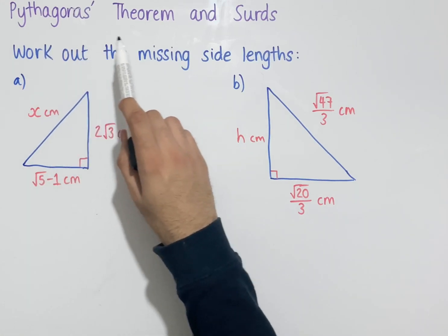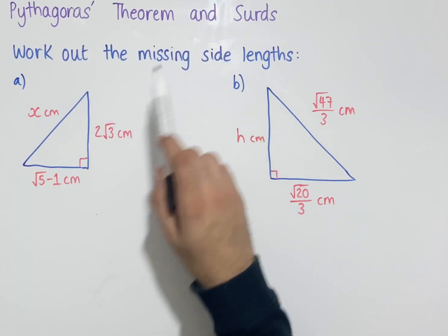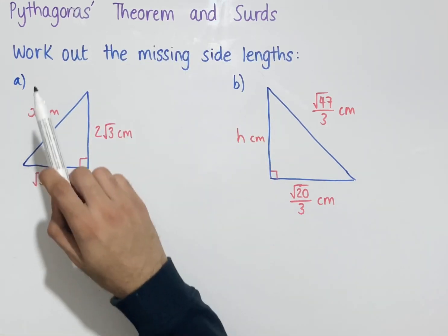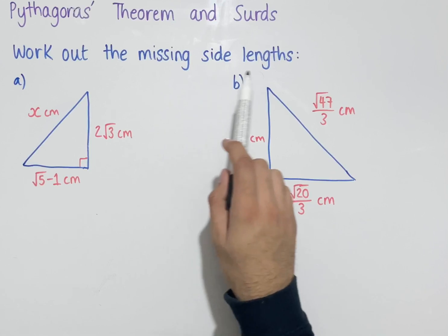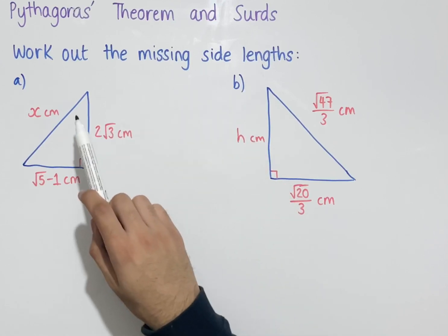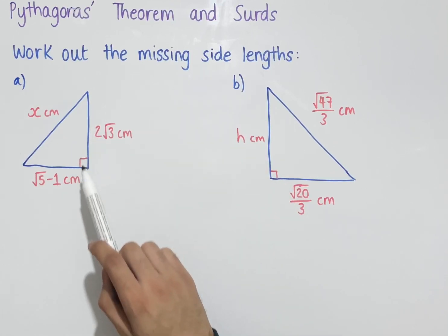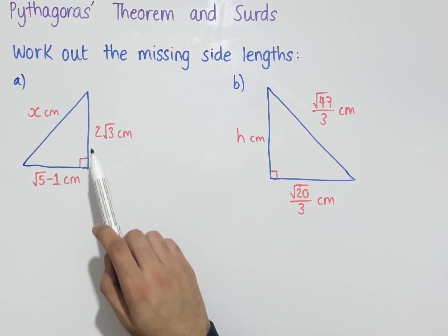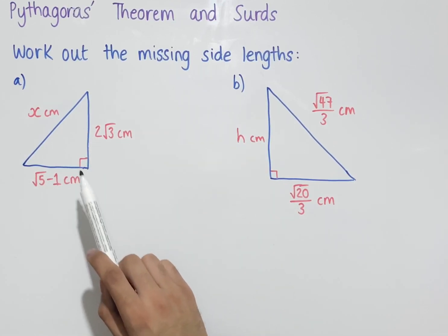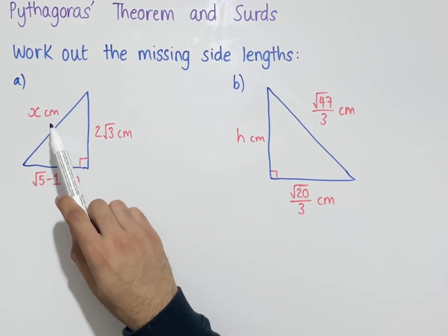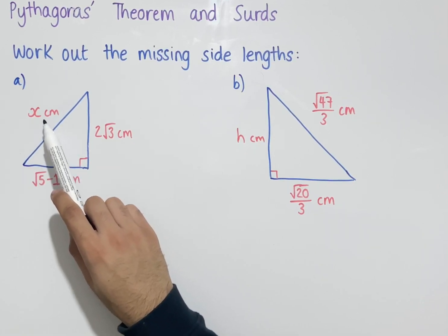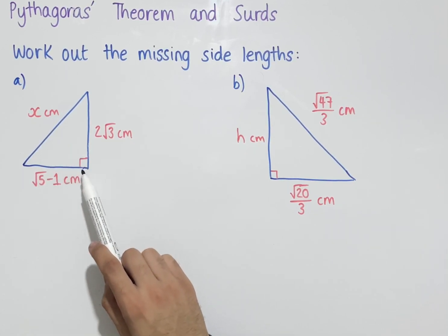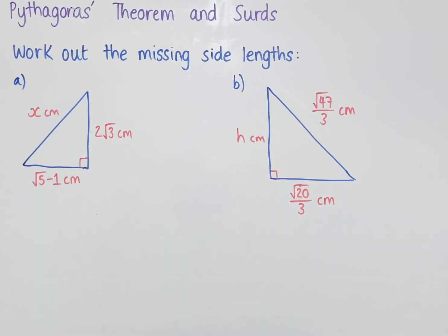Let's look at Pythagoras' theorem and surds. The question says to work out the missing side lengths. The first triangle is a right-angle triangle where we're trying to work out the hypotenuse, since the hypotenuse is the side opposite the right angle.